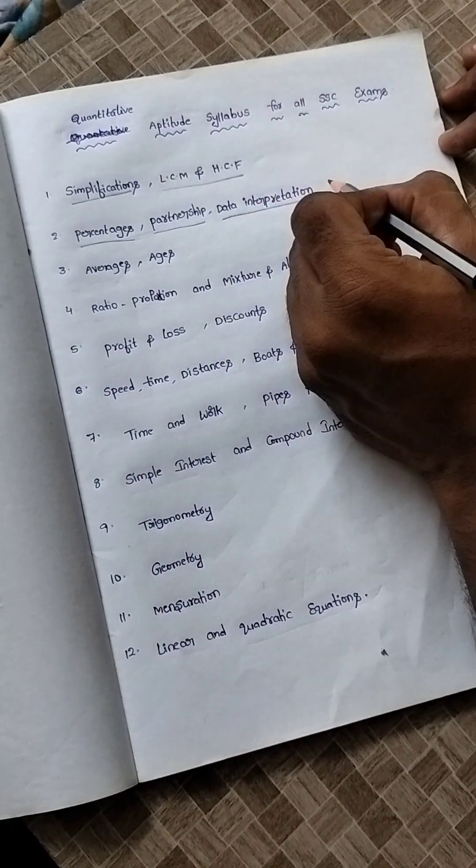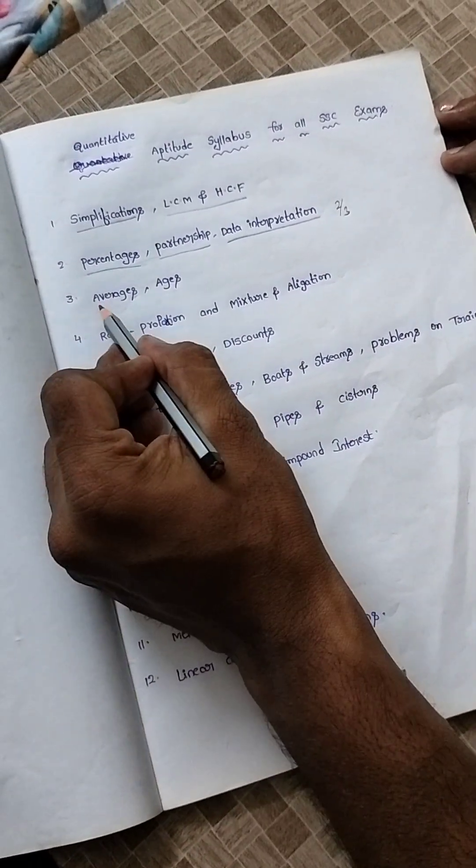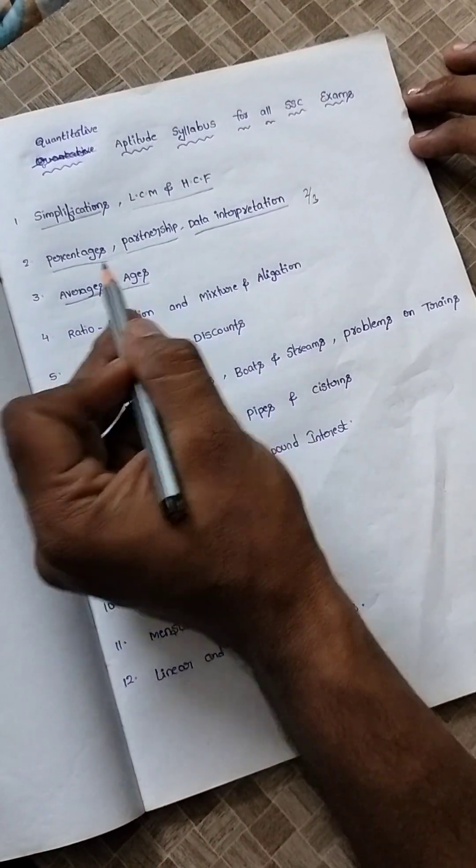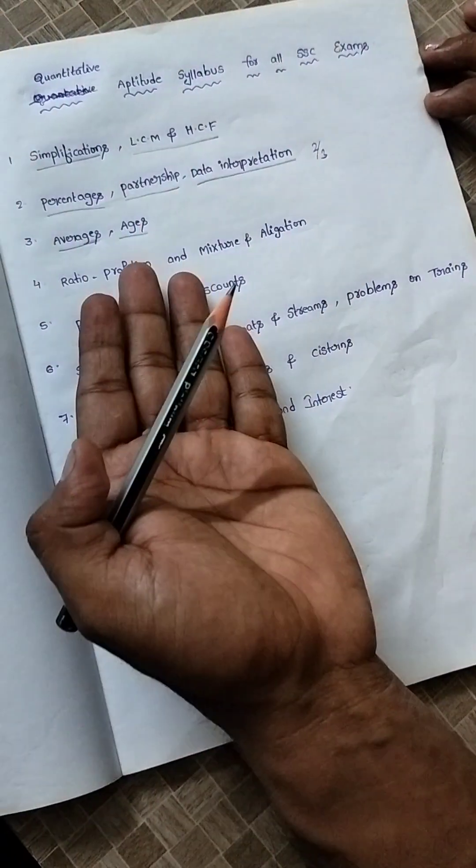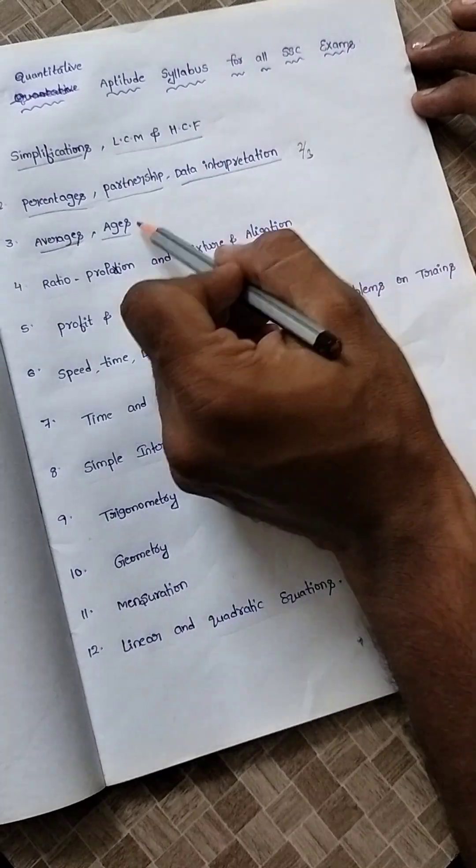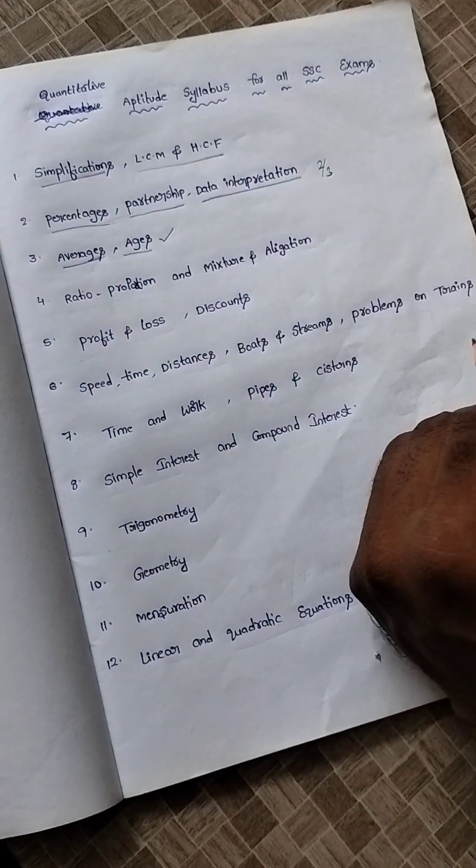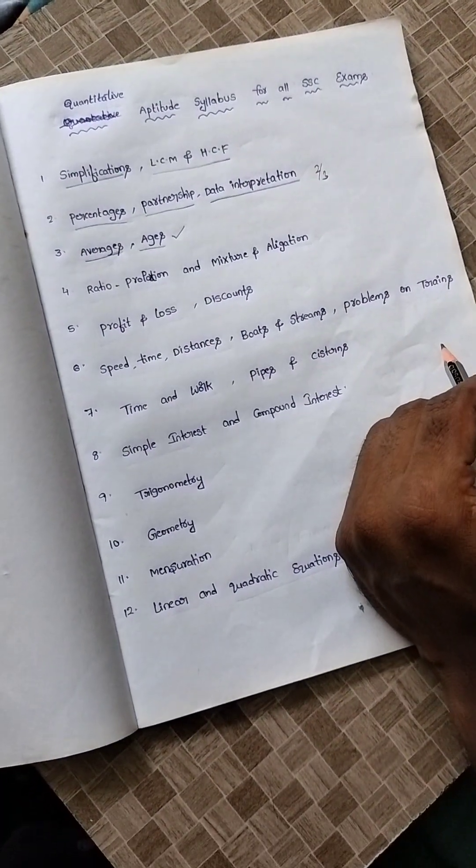Two or three questions will come like that. After that, averages and problems on ages. If you fully get knowledge of the averages topic, then the ages topic will become easy. Here also you can get two questions from any competitive type examination.